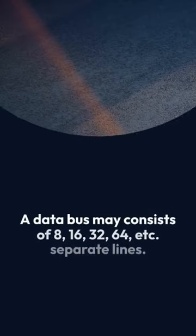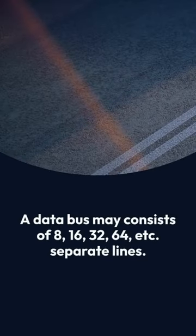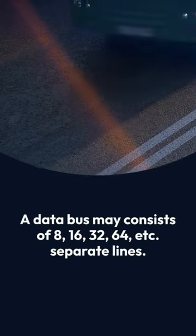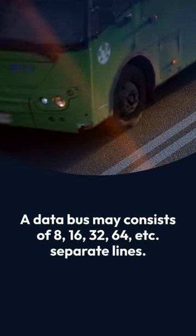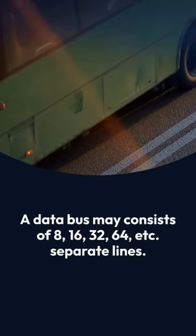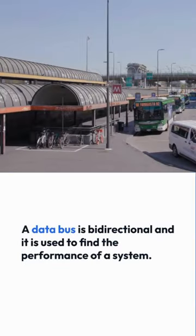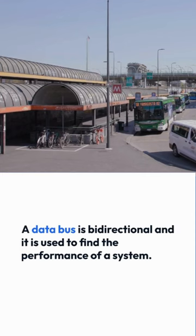A data bus may consist of 8, 16, 32, 64, etc. separate lines. A data bus is bidirectional and it is used to find the performance of a system.